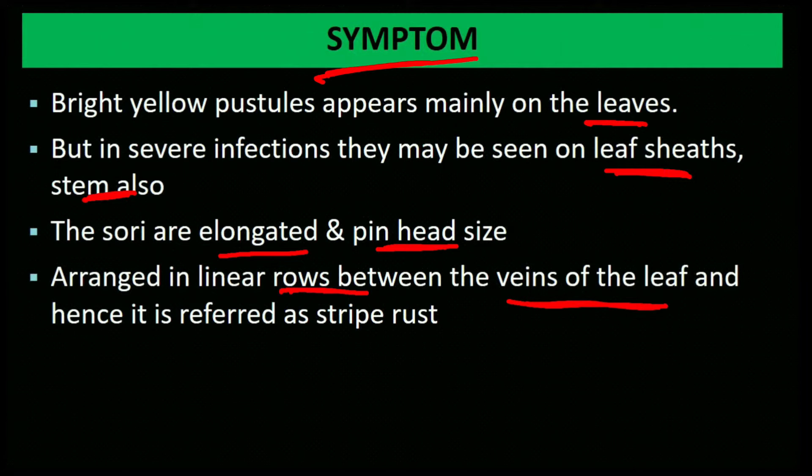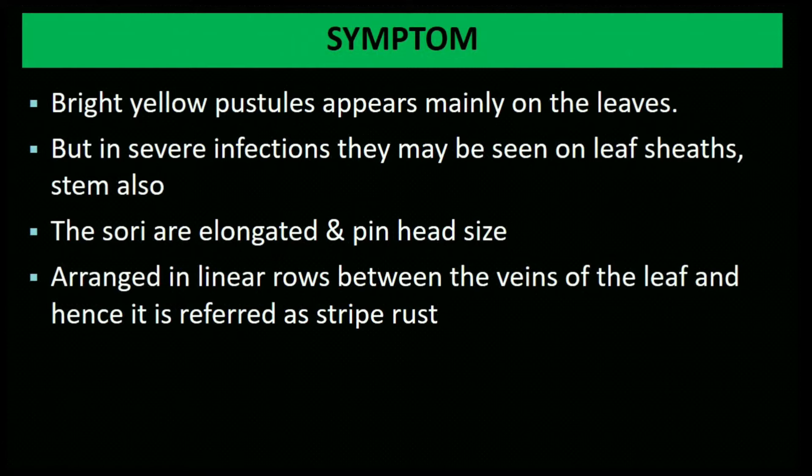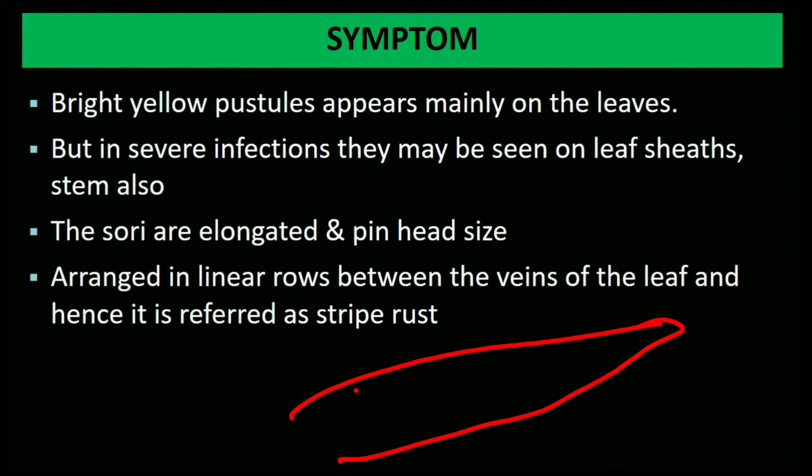Because sori are arranged in linear rows between leaf veins, it is called stripe rust. Bright yellow, elongated pustules of pin-head size appear on leaves. In severe conditions they also appear on leaf sheath and stem. The sori are mostly sub-epidermal and remain covered by the epidermal layer.